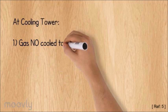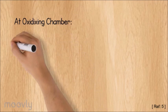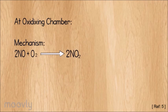Next, the cool nitric oxide is allowed to pass into the oxidizing chamber. The chamber has an inlet for fresh oxygen. Here, nitric oxide combines with oxygen to form nitrogen dioxide. This nitrogen dioxide and non-reacted oxygen then flows into the absorption tower.